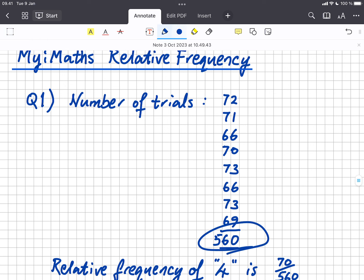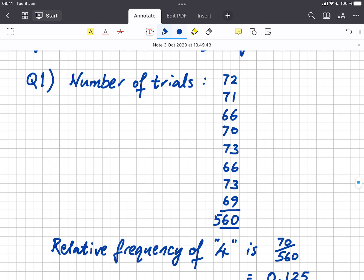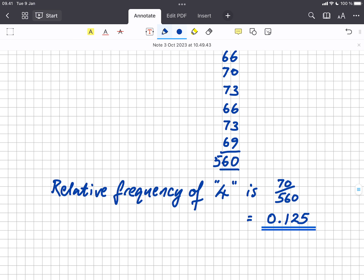So 560 trials is the total and the number of times we got a four was 70 times. So the relative frequency of 4 was 70 out of 560, which when you do 70 divided by 560 is 0.125. So my final answer that I'm going to put in the box is 0.125.